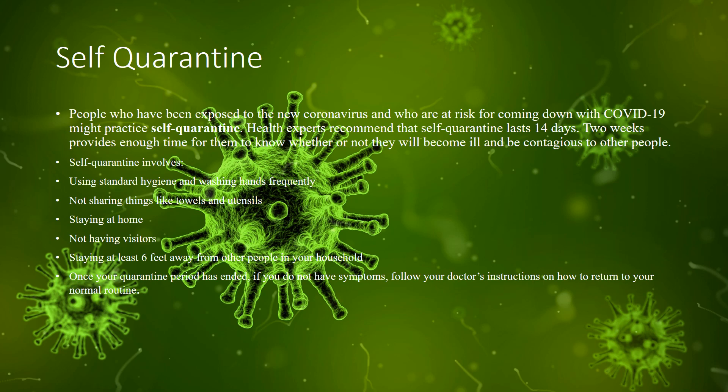Self-quarantine involves: maintaining standard hygiene and washing hands frequently, not sharing items like towels and utensils, staying at home, not having visitors, and staying at least six feet away from others in your household. Once your quarantine period has ended and you do not have symptoms, follow your doctor's instructions on how to return to your normal routine.